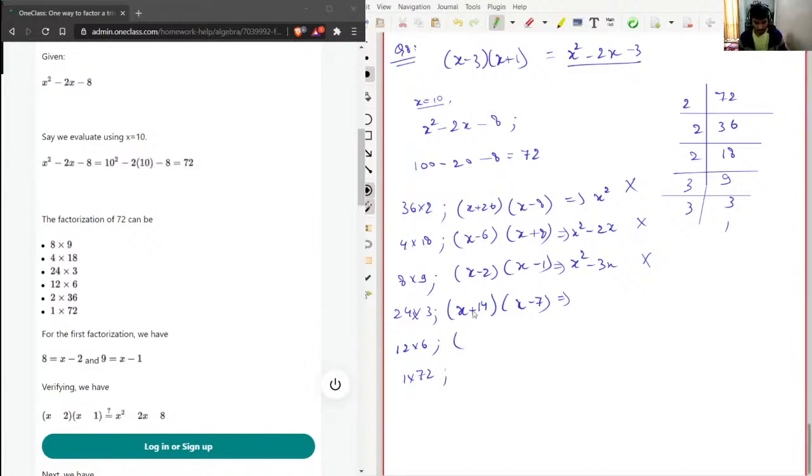So yeah, I'll just check for this also. So this will be x square minus 7 plus 14 will be plus 7x. Again I need minus 2x here. So this will be x plus 2, x minus 4. I think that this will work.